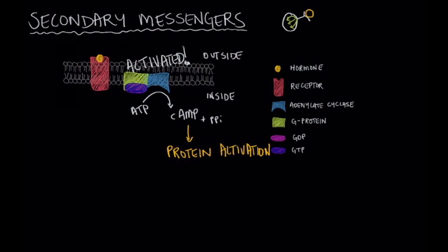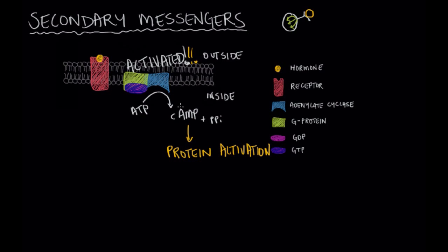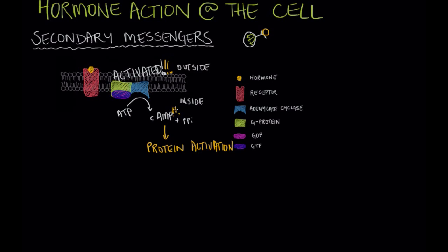Eventually this system resets, but not before several adenylate cyclase enzymes were activated, resulting in a lot of cAMP being produced. And so we call this signal amplification. What I mean by signal amplification is that in theory one hormone can bind to a receptor, and that process can set off a chain reaction that leads to a lot of cAMP being produced. And so it can mean that less hormone is required to ultimately activate the protein or the effect that's being desired.